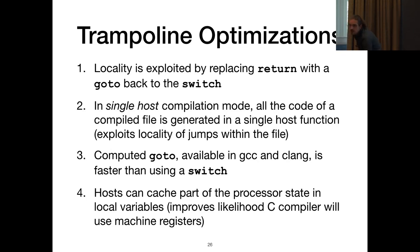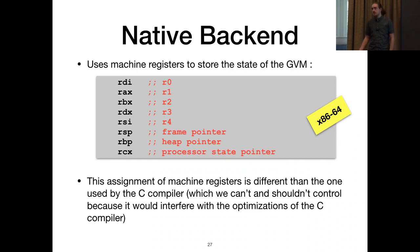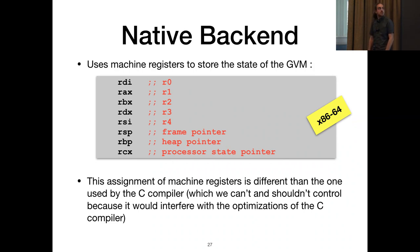Here's how the native back-end works. Without going into too much detail, the key difference from the C back-end is: first, it doesn't use a trampoline. And because we have control over the register allocation, we can put most of the processor state inside machine registers. For example, this is the register allocation for x86-64. We also generate label structures.